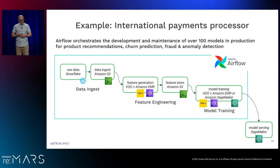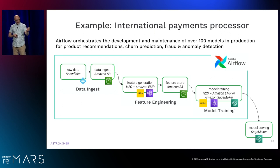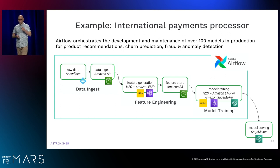Here's another example from an international payments processor based in the UK. They do data ingestion from Snowflake, landing on S3, and build model features using H2O and MapReduce jobs — maintaining a feature store in S3. They do model training with a combination of H2O and Amazon EMR or SageMaker, push models out through SageMaker, run this on a daily basis, and have about 100 models in production.